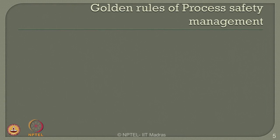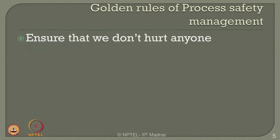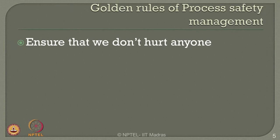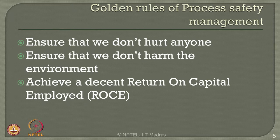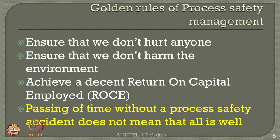If it is understood that process safety is important, let us quickly see what are the golden rules of process safety management. Ensure that we do not hurt anyone during the process. Ensure that we do not harm the environment based on the process we are carrying out. Achieve a decent return on capital employed — ROCE is one of the important indices based on which the performance of a company is rated. Passing of time without a process safety accident does not really mean that all is well in your plant.